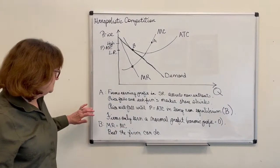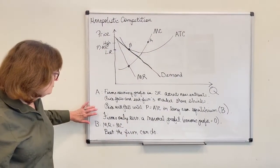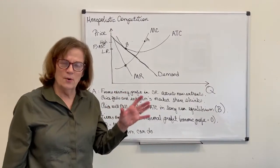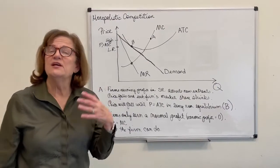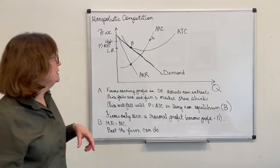So at point B, firms are only earning a normal profit and no economic profit. So they're doing the best they could do and nobody could do any better anywhere else.